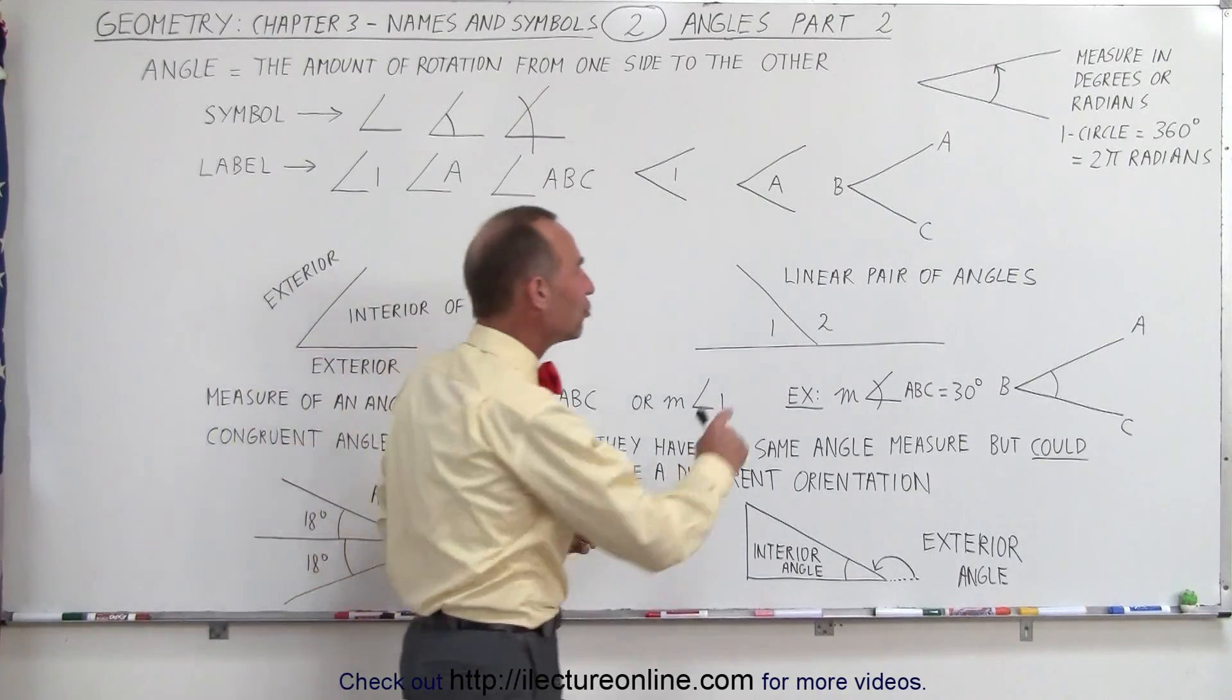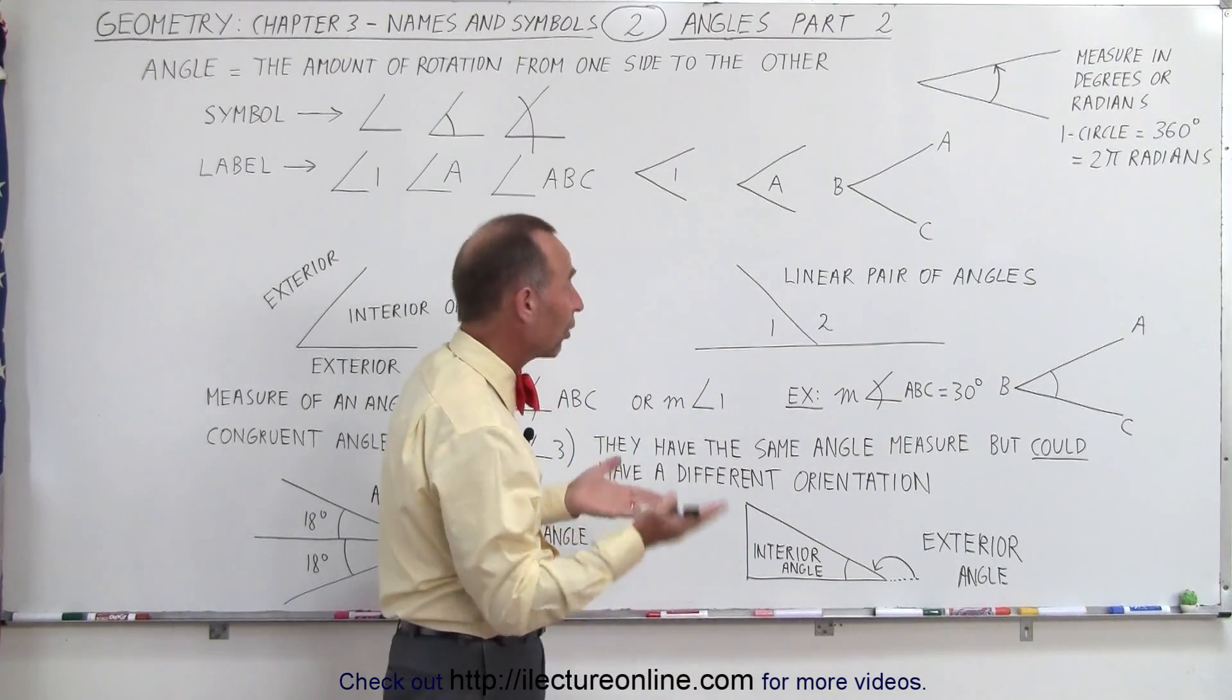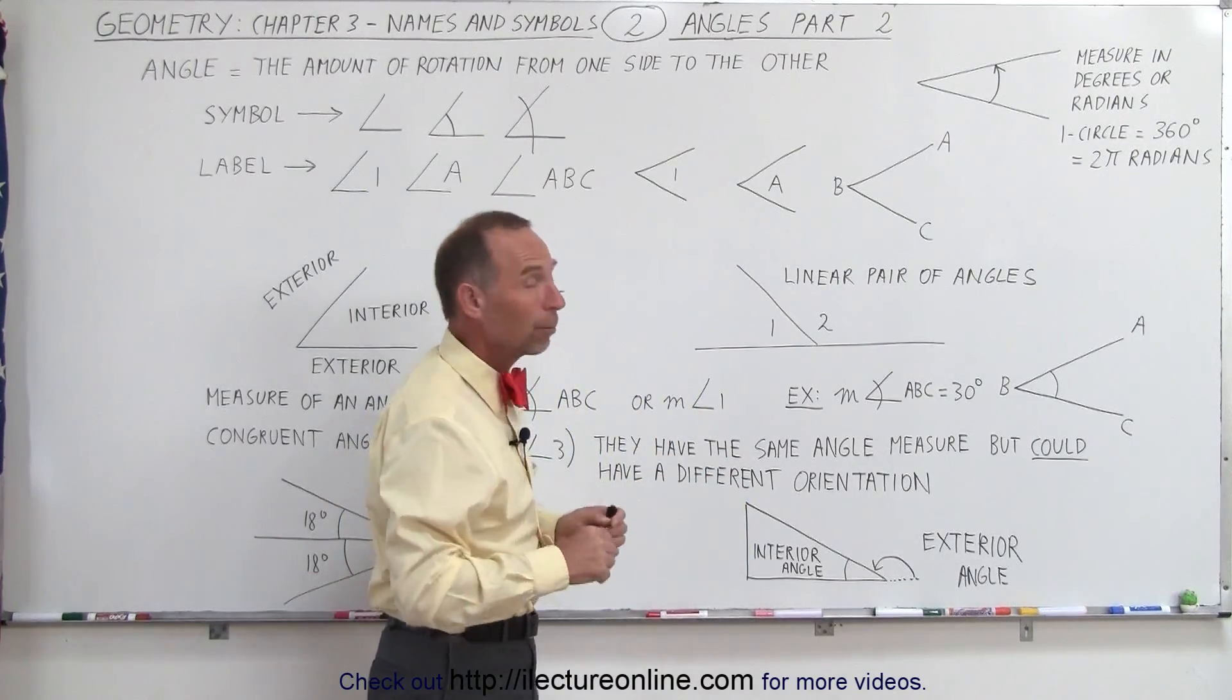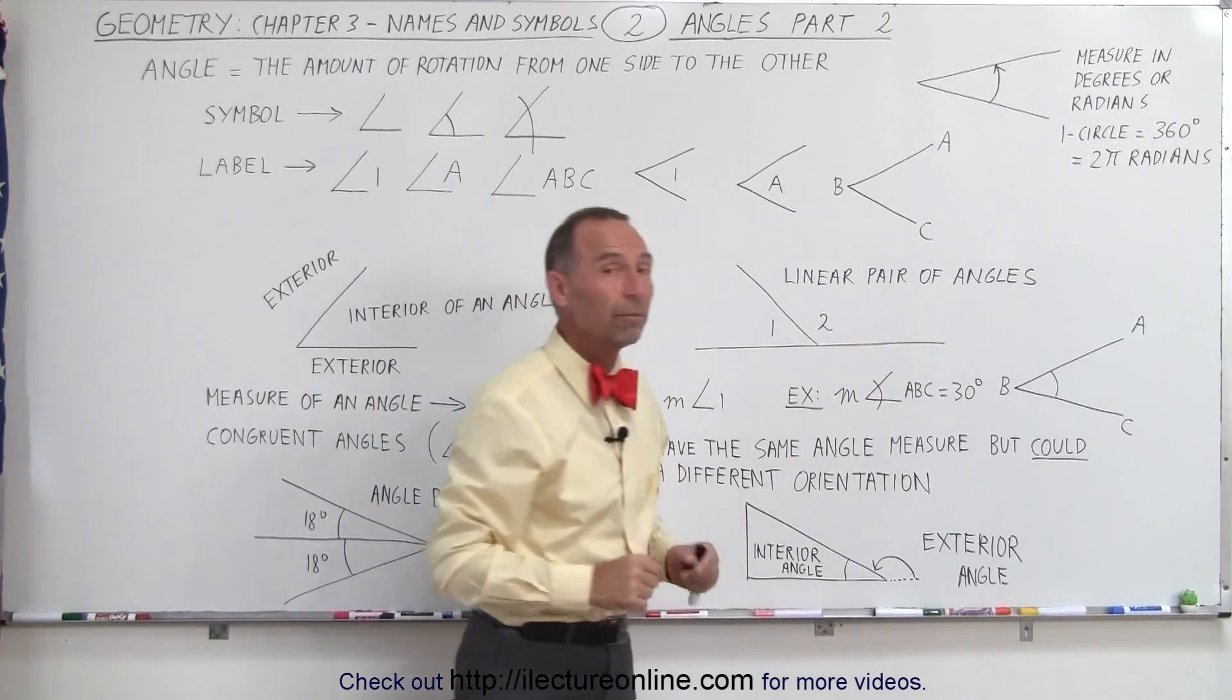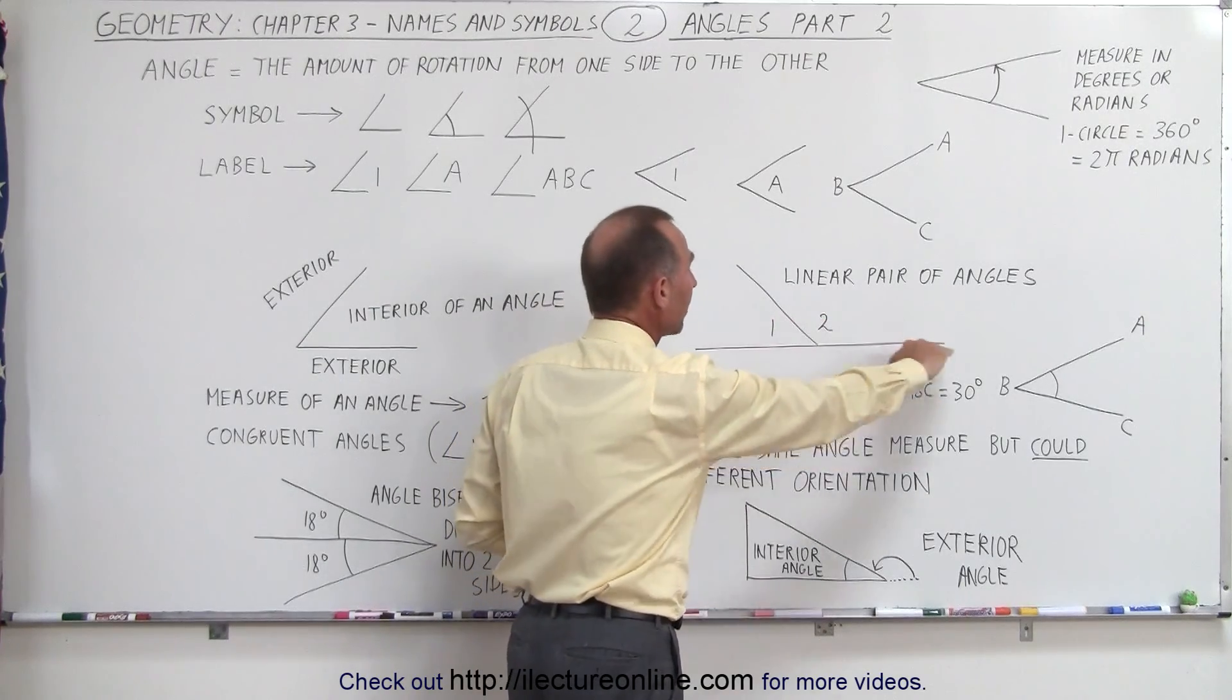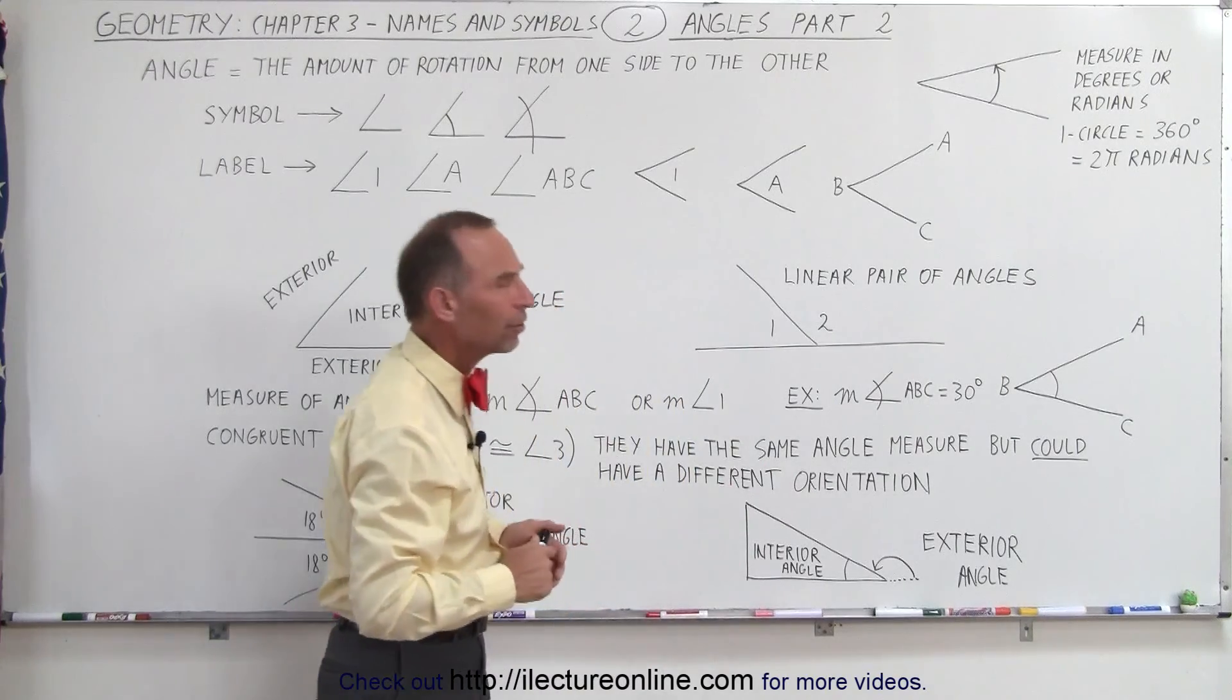Here, notice that when we have two angles and the sum of the measures adds up to 180 degrees, we call them supplementary angles. They're also called a linear pair of angles because the two angles here, side by side, can be drawn next to a line.